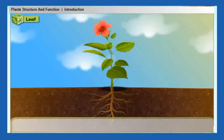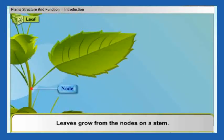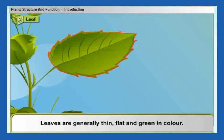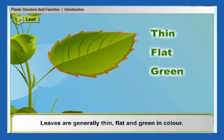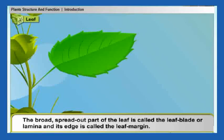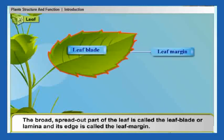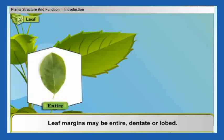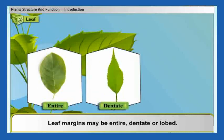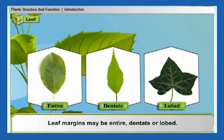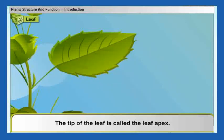Leaves grow from the nodes on a stem. Leaves are generally thin, flat, and green in color. The broad, spread-out part of the leaf is called the leaf blade or lamina, and its edge is called the leaf margin. Leaf margins may be entire, dentate, or lobed. The tip of the leaf is called the leaf tip.